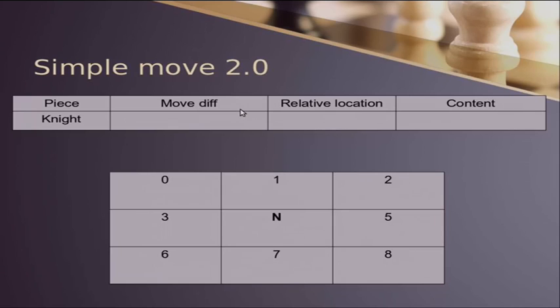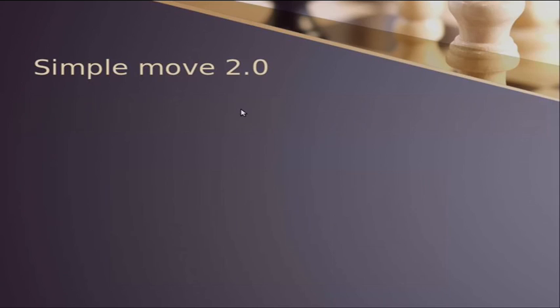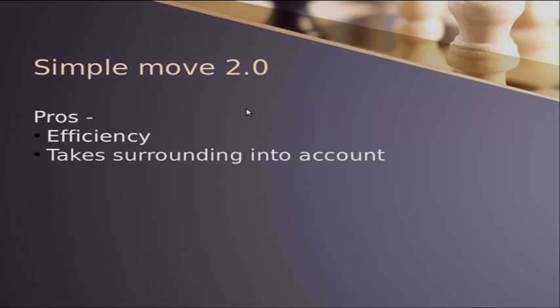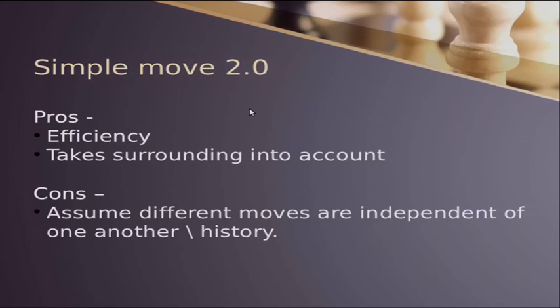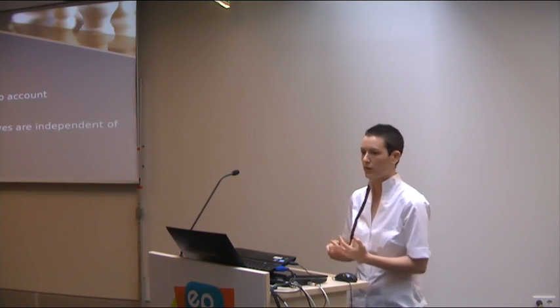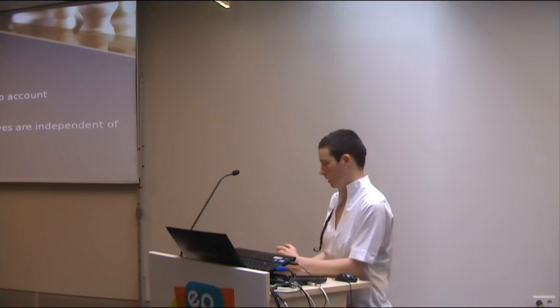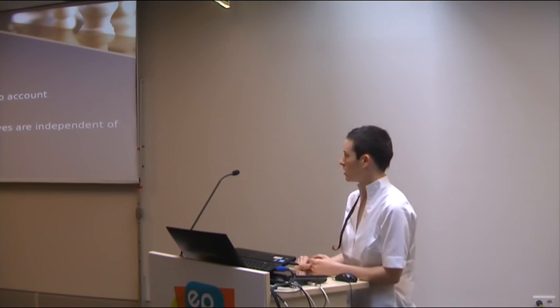So the pros of this approach is we keep it efficient, not too much data that we store, and of course runtime. We take the surrounding into account. We can argue whether the surrounding is one radius, two radius, more. But also doing this tells us that we have the trade-off. I talked before that we have some external knowledge about the game and about the environment we are in. And the main con about this, or this disadvantage, is that we assume that moves are independent of one another. While we can usually say that it's true, it's not true for all the moves. For example, castling. A king cannot do castling if there was chess before or if the king moved before. And there are several more moves that are limited by this limitation.